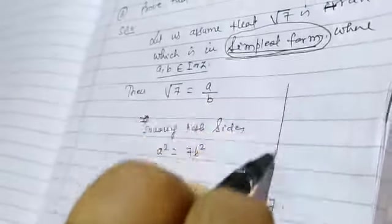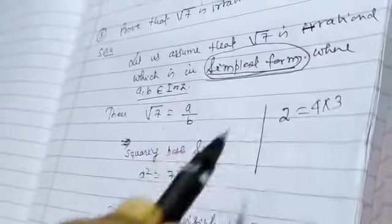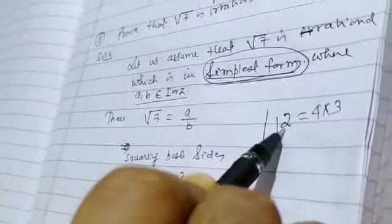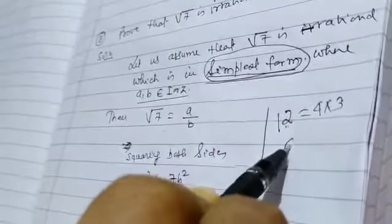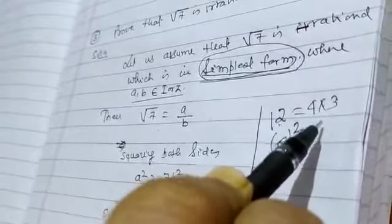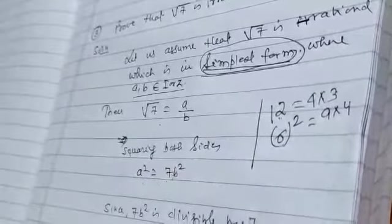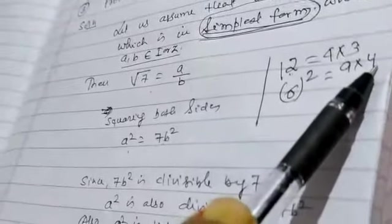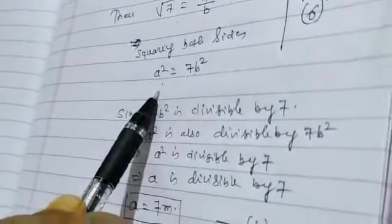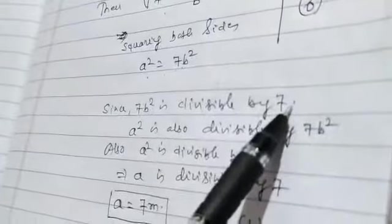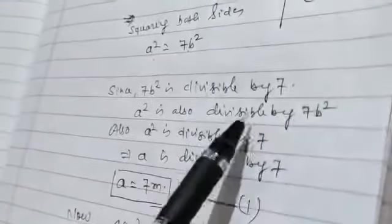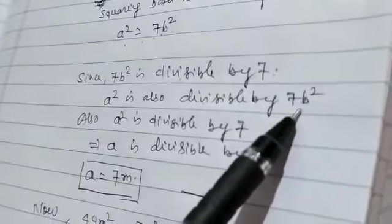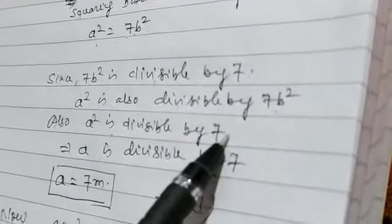A square is divisible by 7. So 12 is equal to, suppose, 4 into 3. So 12 is divisible by 4, and 12 is divisible by 3. 6 square is equal to 9 and 4, so 6 square is divisible by 9 and 6 square is divisible by 4. You must take care. Now, squaring both sides, we have A square is equal to 7 B square. Since 7 B square is divisible by 7, A square is also divisible by 7. A square is divisible by 7.